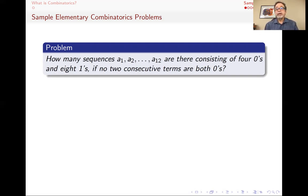The first problem: how many sequences of 12 numbers are there consisting of four 0's and eight 1's if no two consecutive terms are both 0's? So that's the question. Four zeros, eight ones, and no consecutive zeros. I mean, you could actually try, 12 is not that large, and you could try to write them all down, but that would be a brute force method and would not be the ideal way of doing it.